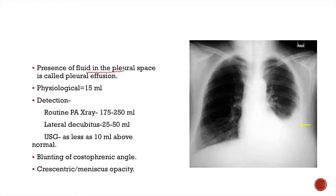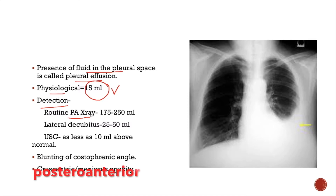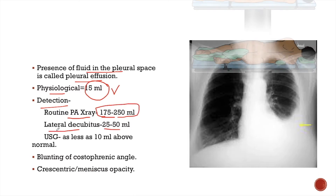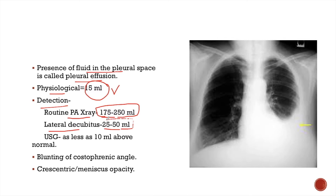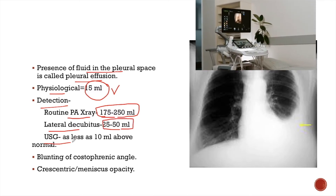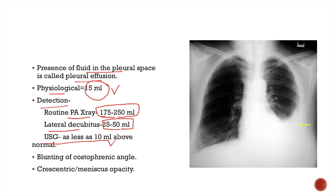Presence of fluid in the pleural space is called pleural effusion. Normally in physiological conditions we have approximately 15 ml of fluid in the pleural space. This 15 ml of fluid is not detected on a radiograph. For detection on a routine posterior-anterior chest X-ray, approximately 175 to 250 ml of pleural fluid is required. In a lateral decubitus film, approximately 25 to 50 ml is detected. By ultrasound, pleural fluid as little as 10 ml above normal can be detected.